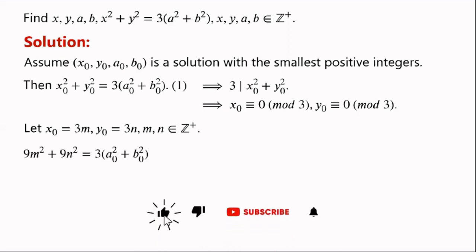We substitute x0 and y0 in equation 1. We can now write 9m squared plus 9n squared equals 3 times a0 squared plus b0 squared. We divide the equation by 3 and now write a0 squared plus b0 squared equals 3 times m squared plus n squared.